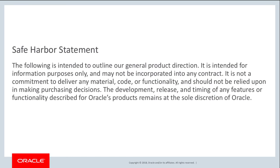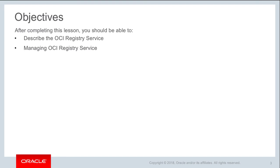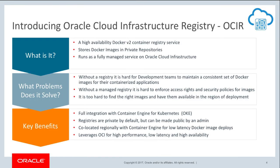The major objectives of this session are to describe the OCIR registry service, how you can manage the registry service itself, creating public and private repositories, uploading images, and how you can use those images within a Kubernetes cluster.